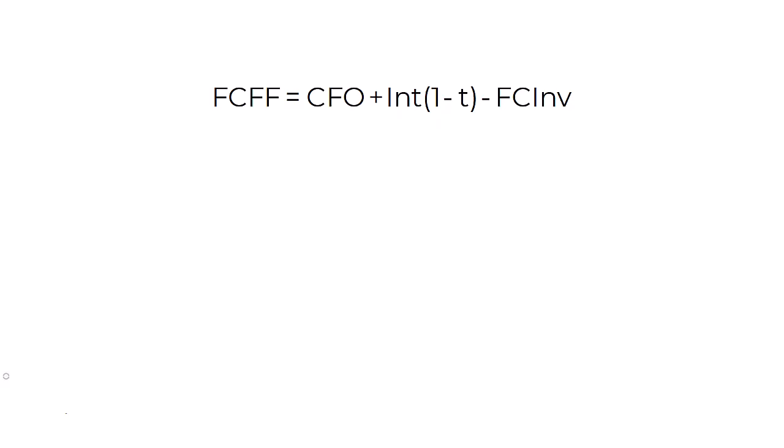Now, what about free cash flow to equity? Let's stick with our free cash flow to the firm, which we've got as CFO plus interest into 1-T, assuming interest was part of CFO, minus fixed capital investment. We want to go from that to FCFE. What's the difference?